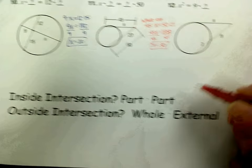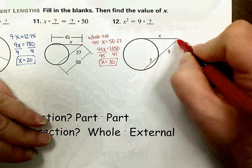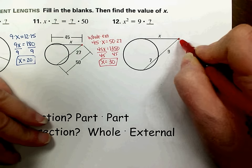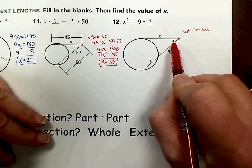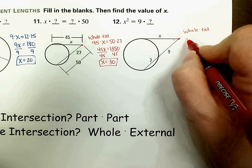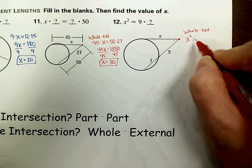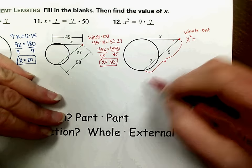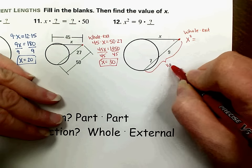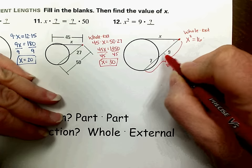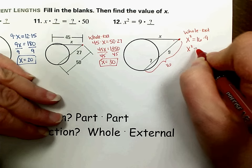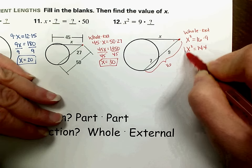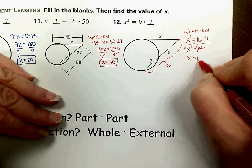The next outside intersection is number 12. We have a tangent and a secant intersecting outside the circle. For the tangent, the whole and the external are the same, so you're squaring that number. For the secant, don't forget to add those parts — 7 plus 9 gives a whole length of 16, times the external part of 9. So 16 times 9 gives us 144. Undoing the squaring by taking the square root of both sides, we get x equals 12.